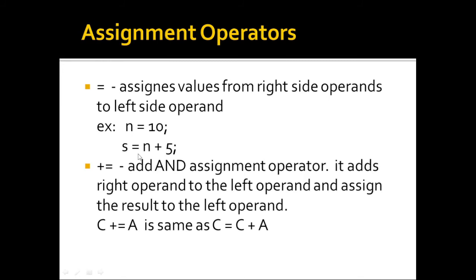The assignment operator uses the equal symbol (=), which assigns values from the right-side operand to the left-side operand. For example, n = 10 assigns the value 10 to variable n, so after this statement is executed the value of n will be 10. Another example: s = n + 5 — if n is 10, then 10 + 5 = 15, and the value 15 is assigned to variable s.